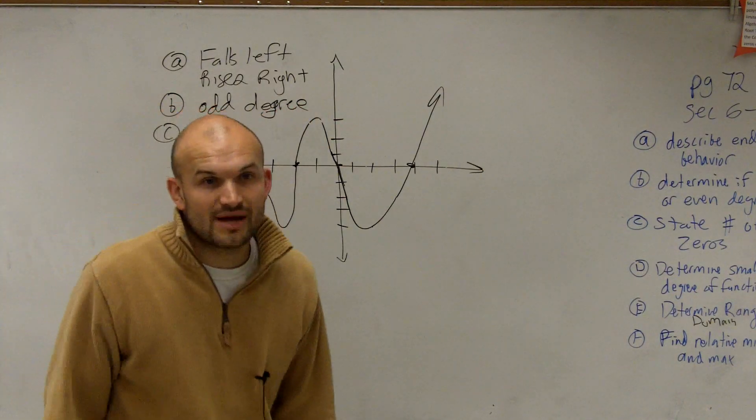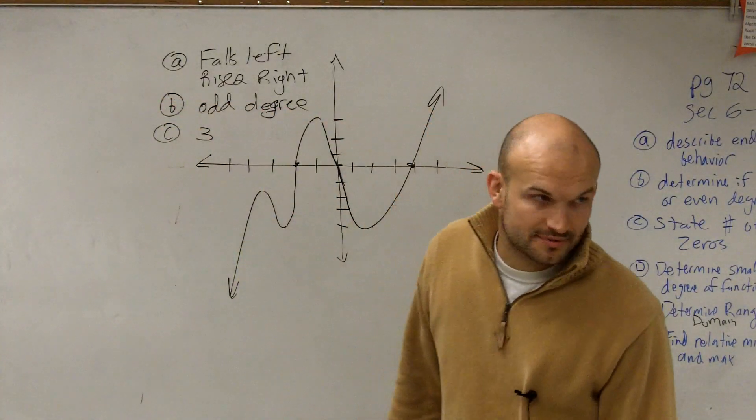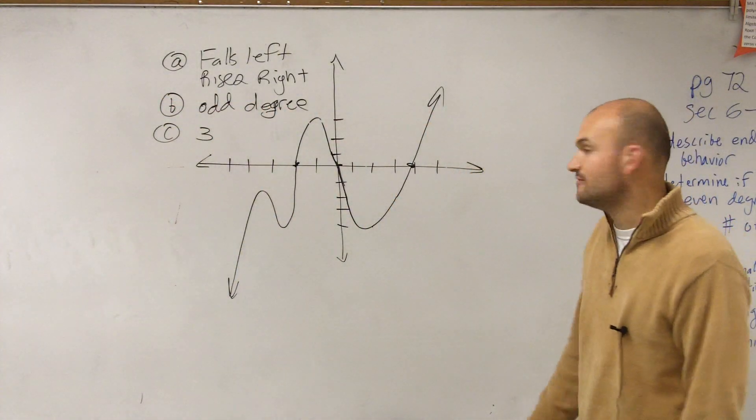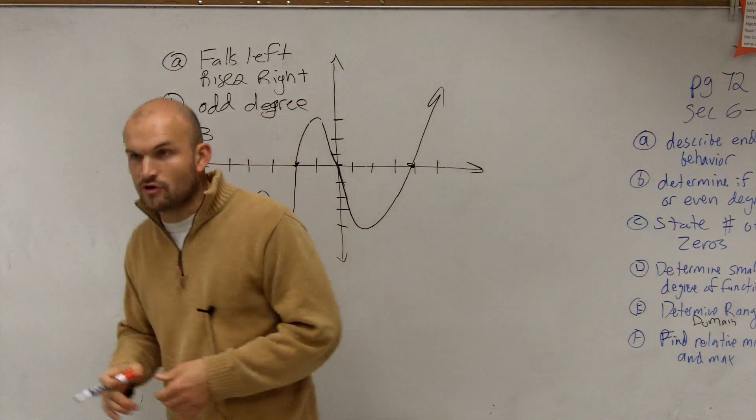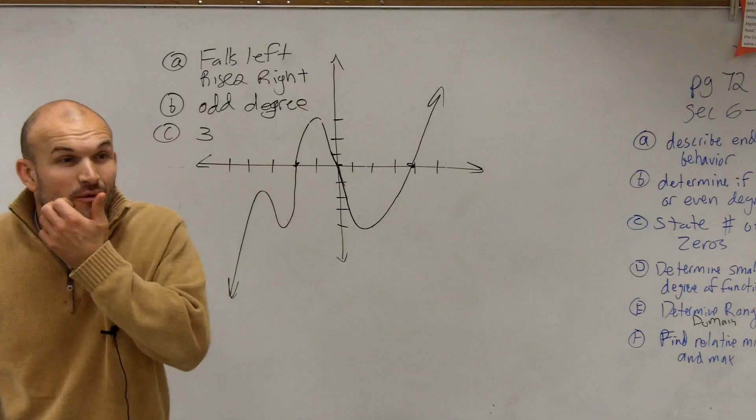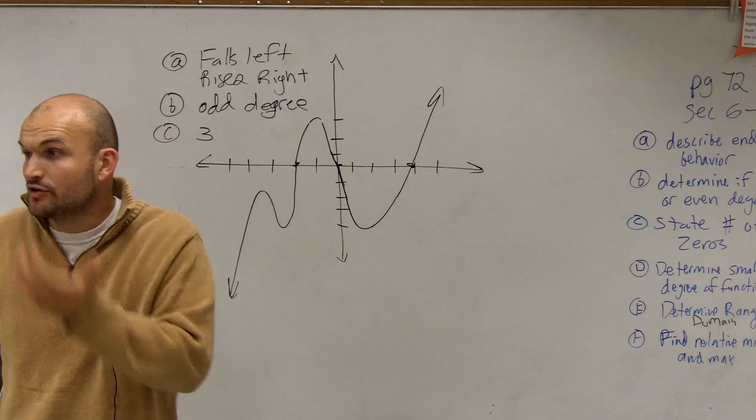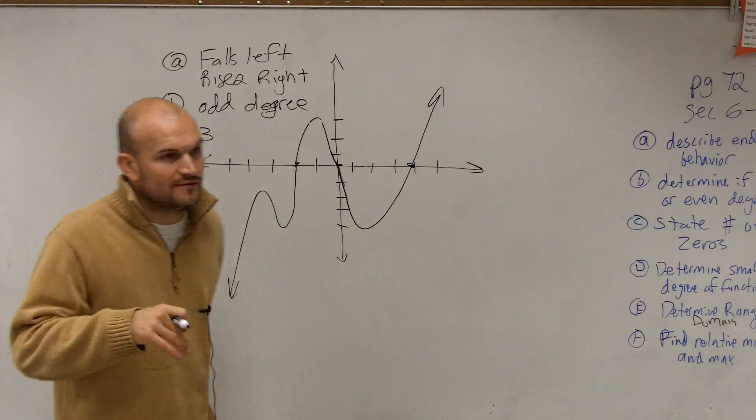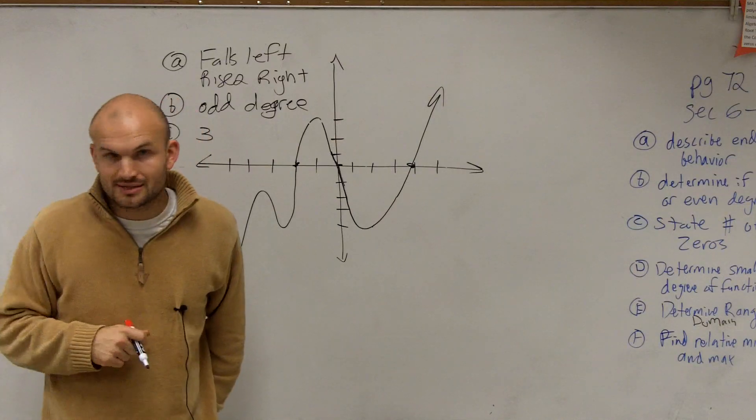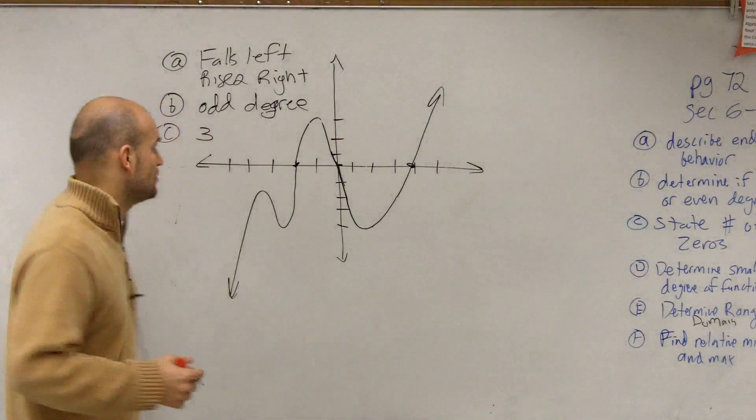Then c, we know that there's three zeros. Now, for the next thing, we have to talk about what's going on with the function. So for d, it asks us to determine the smallest degree of the function. So we actually need to figure out the smallest number that our degree could be. Remember, we talked about turning points last class period, right?